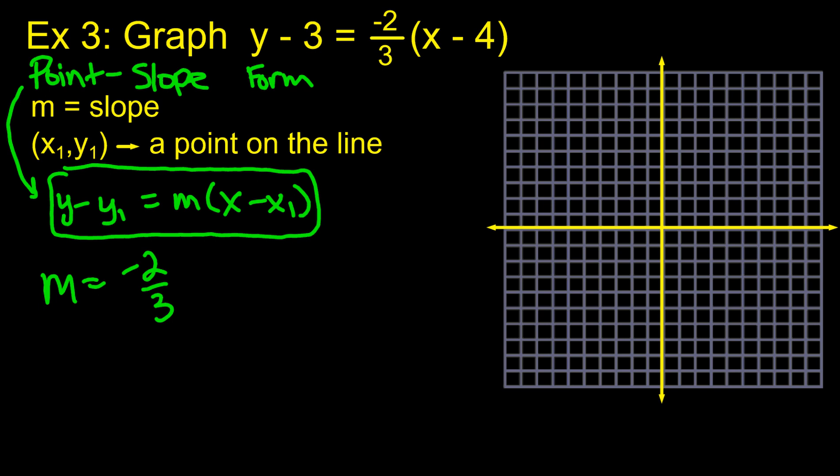And then x1, y1 is a point on the line. So this is x1, and over here is y1. And you notice it's x minus x1, so that means x1 has to be 4. And y1 has to be 3. Not negative 3 and not negative 4 because it's x minus x1, so it would be x minus 4.